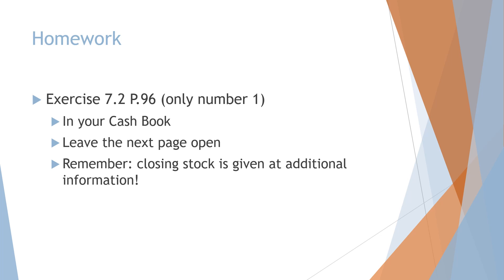Homework for the next lesson: Exercise 7.2, page 96, only number 1 again. Do this exercise in your cash book and leave the next page open. Remember, closing stock is given at additional information.